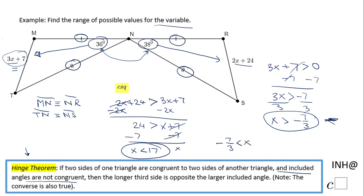That goes with this inequality. And then x less than 17—that goes with this one. So x has to be between negative 7 thirds and 17 in order to have this situation you see in the diagram.